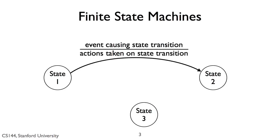Edges between the states define how we transition between them. When we draw an edge, we first specify what events cause the transition to occur. Below this, we can state what actions the system will take when that transition occurs. The second part is optional because not all transitions have actions associated with them. But if there is an action, you should specify it.